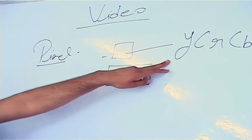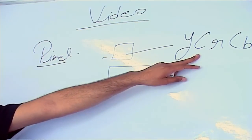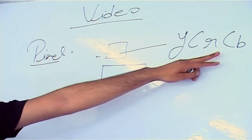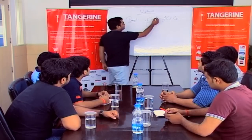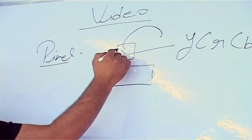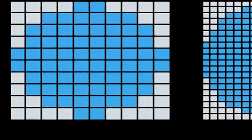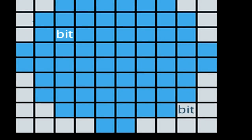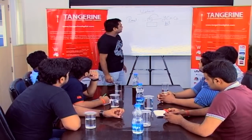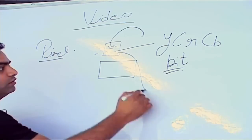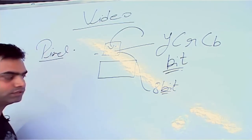Y is the luminance, CR is the prominence of red color, and CB is the prominence of blue color. The information in the pixel is denoted by bit. In an ideal case, in one pixel, we have eight bits of information.